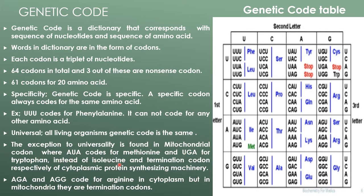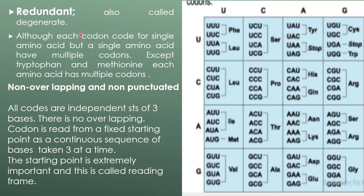The exception to universality is found in mitochondrial codons, where AUA codes for methionine and UGA codes for tryptophan, instead of isoleucine and termination codon respectively, as used in cytoplasmic protein synthesis machinery. Additionally, AGA and AGG code for arginine in the cytoplasm but are terminal codons in mitochondria.